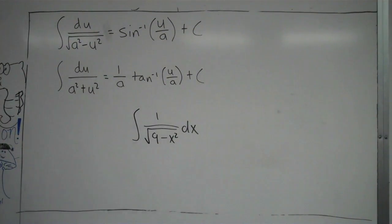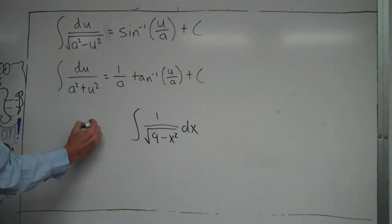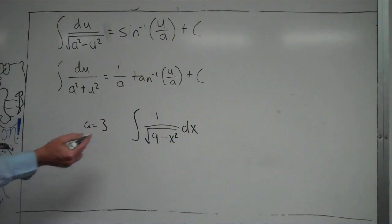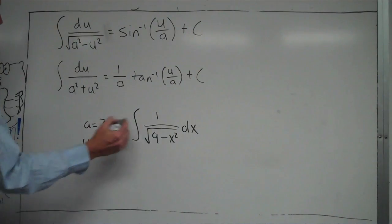When you get to a problem like this and realize it's inverse trig, in this case inverse sine, first identify what your a and u are. a is always a constant and u is a variable. In our case, the 9 is what a² is. So if a² equals 9, that means a equals 3, since 3² equals 9.